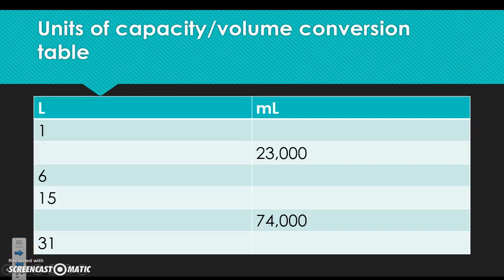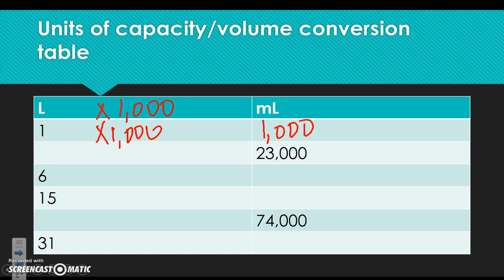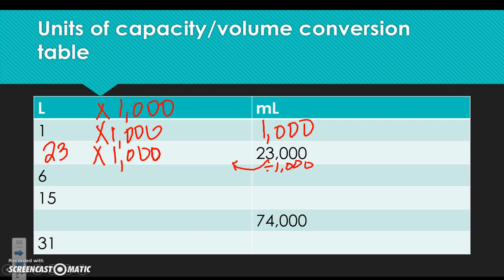Now let's look at capacity or volume. To go from liters to milliliters, multiply by 1,000 because a liter is 1,000 times bigger than a milliliter. 1 times 1,000 gives milliliters; going backwards, divide by 1,000. 23,000 divided by 1,000 is 23 — check: 23 times 1,000 equals 23,000. 6 liters equals 6,000 milliliters.